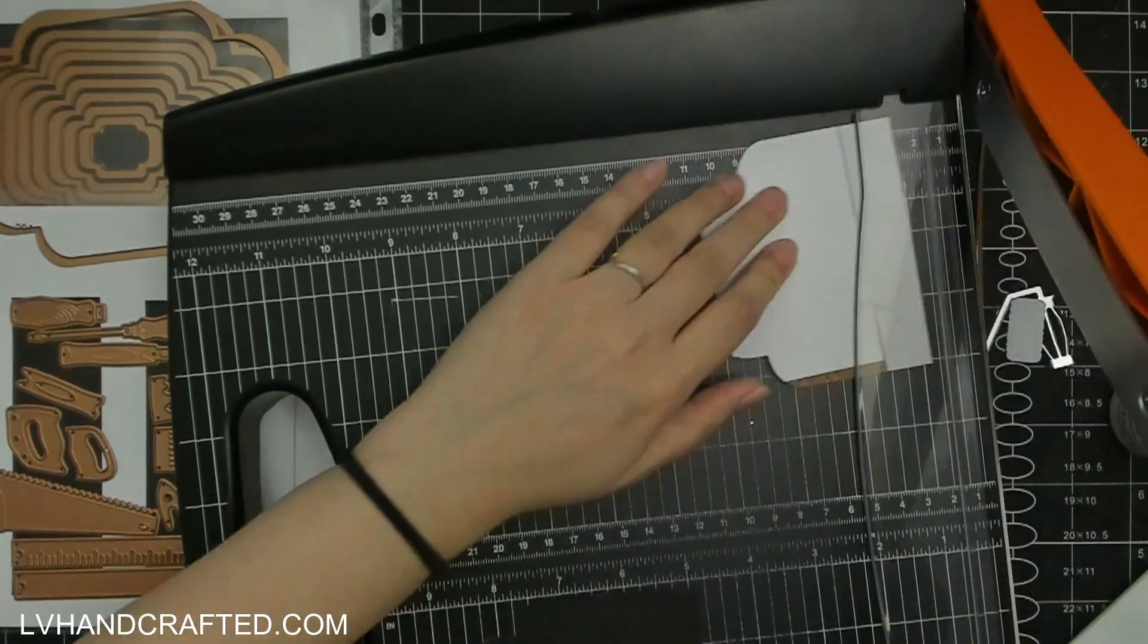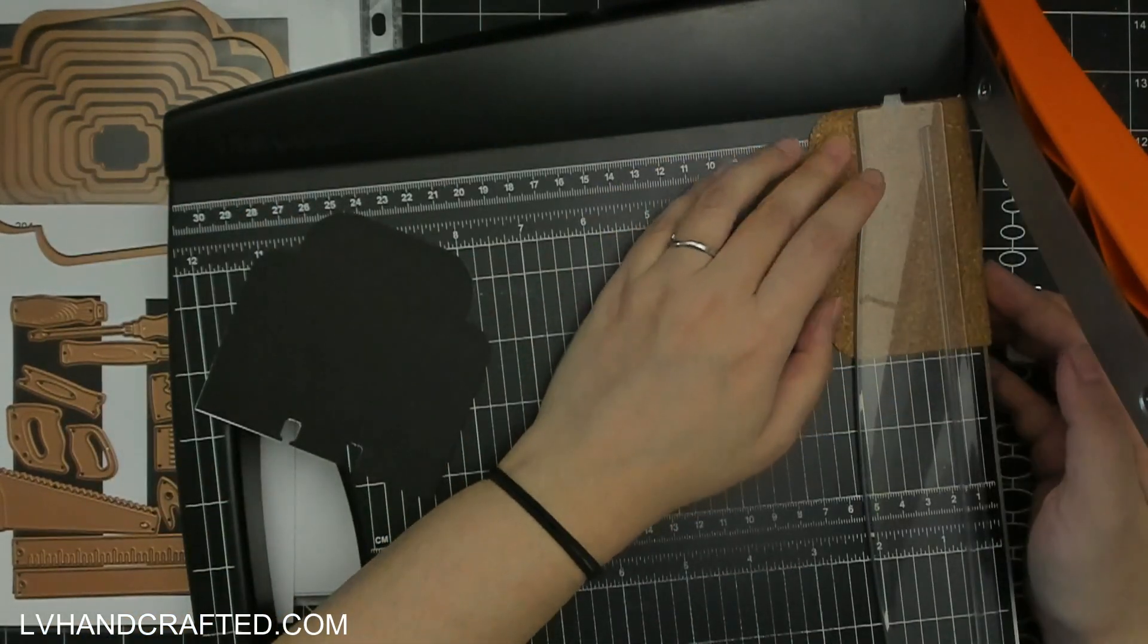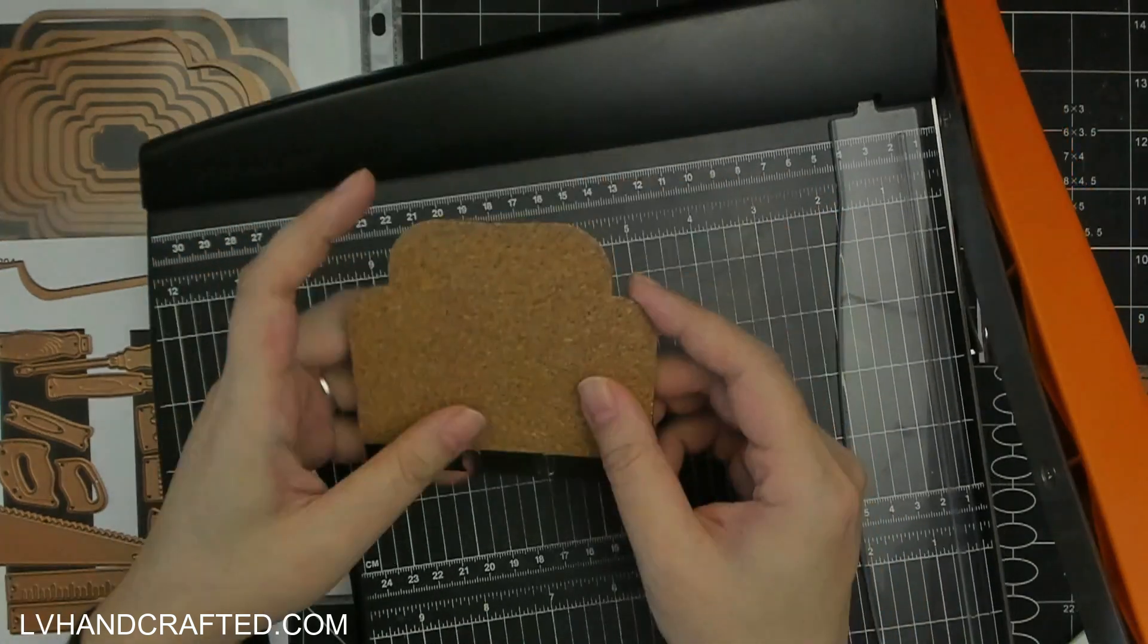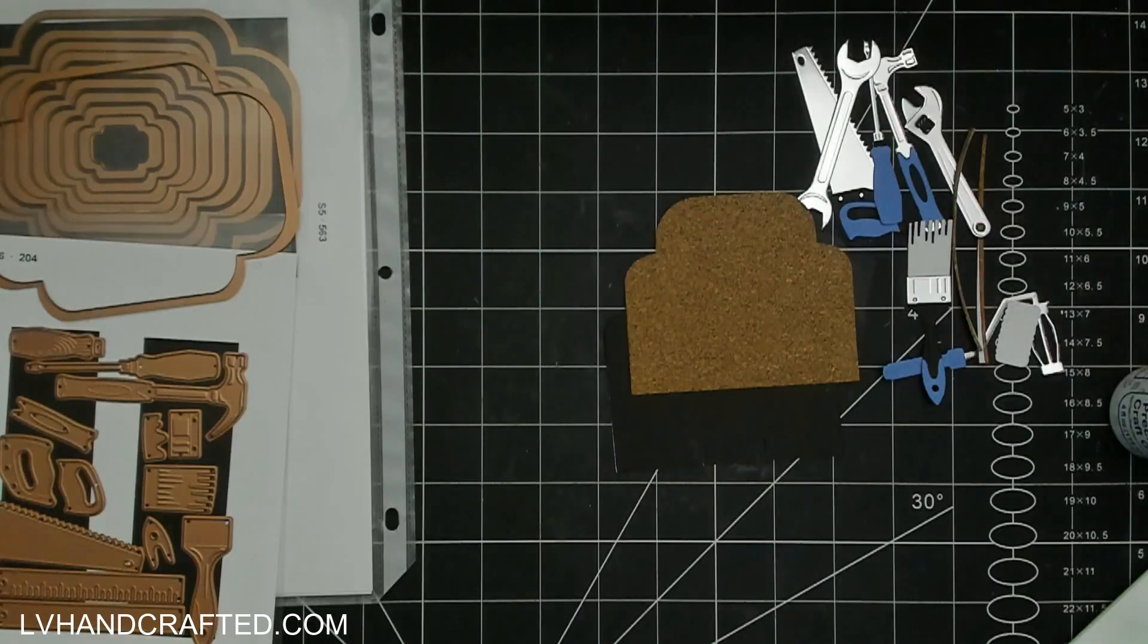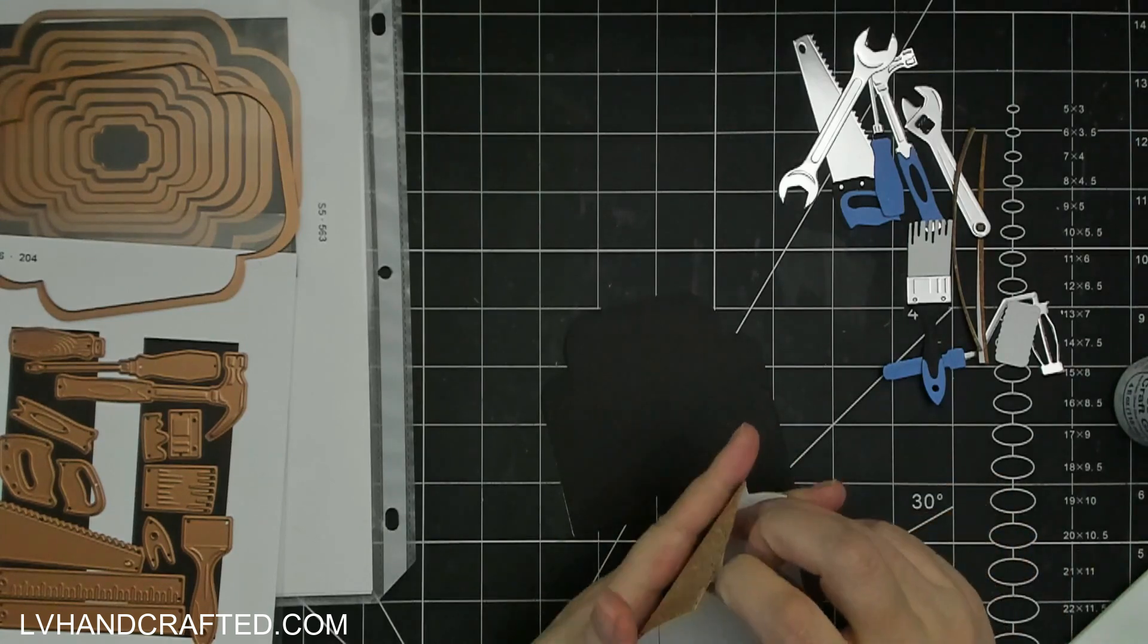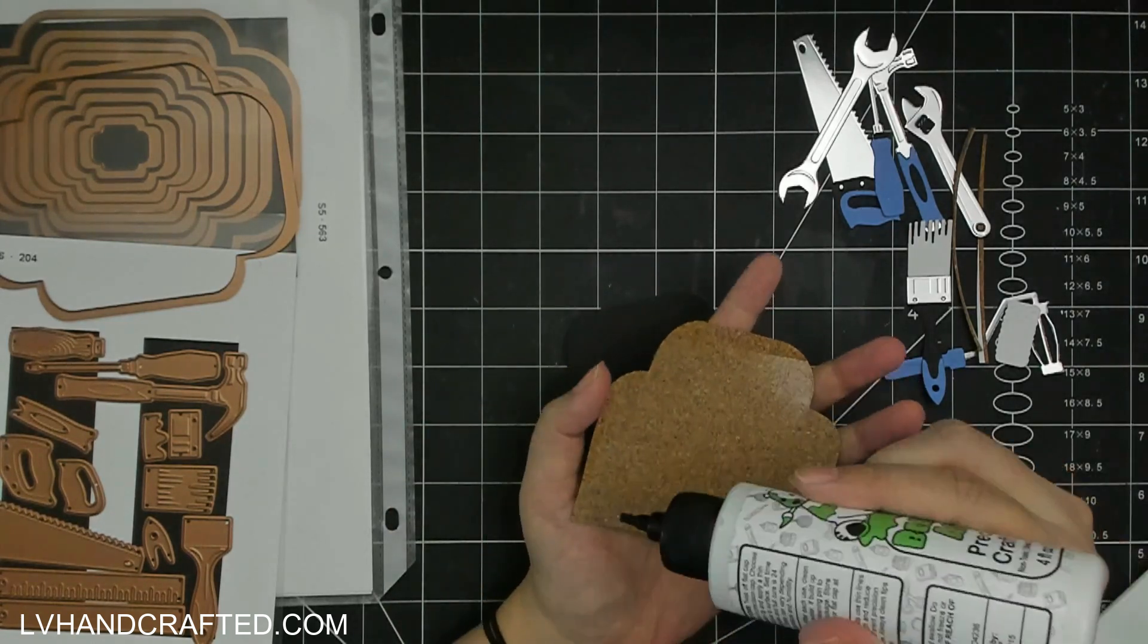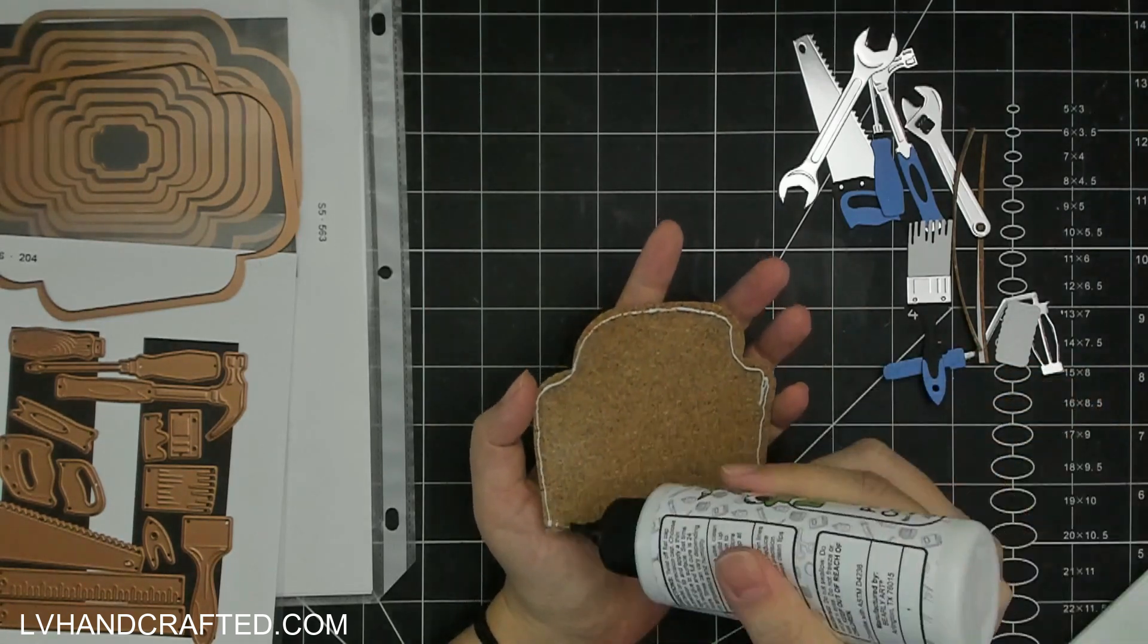And I've die cut using the exact same shape die, a layer of cork. It's a thin layer of cork that I did put some double-sided adhesive on the back already before I die cut it. And part of the reason for that is I found that this cork, it is pretty thin. It's meant to be used for paper crafting. It's not thick enough to really be like a cork board that you would stick anything into. And so it can actually break up quite easily.